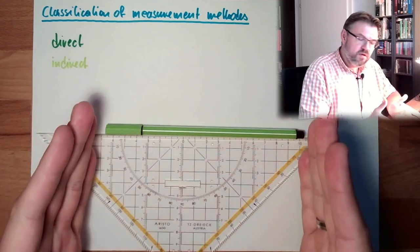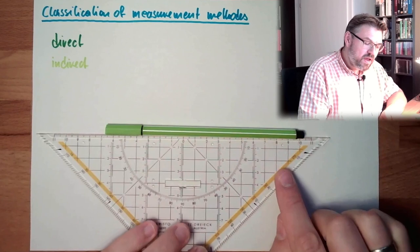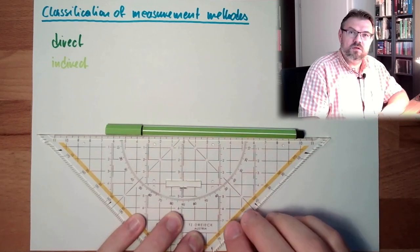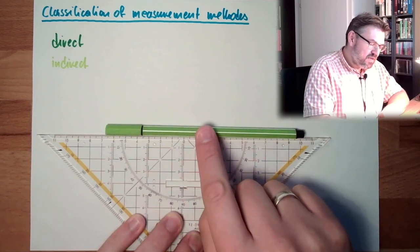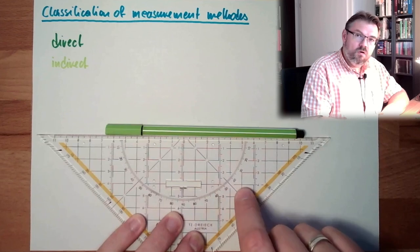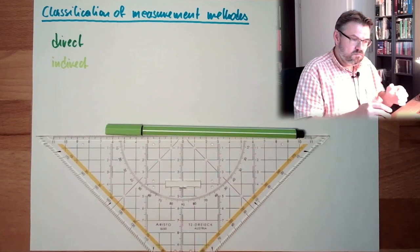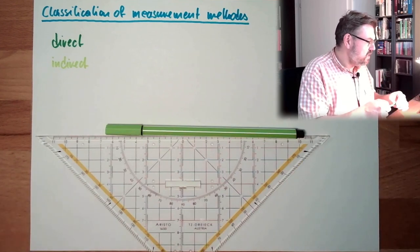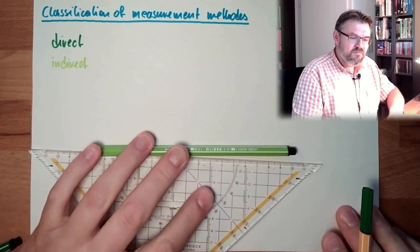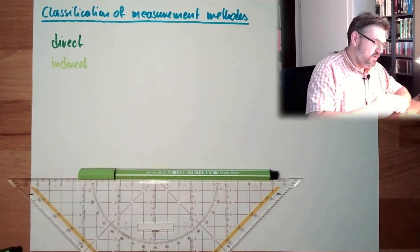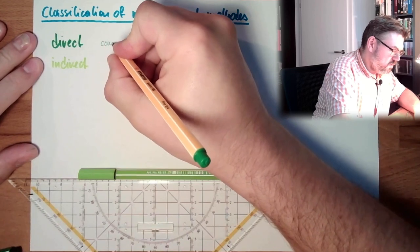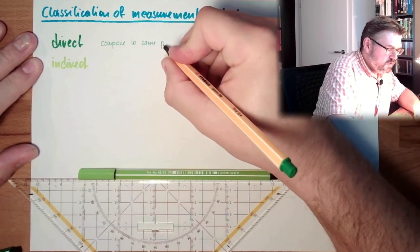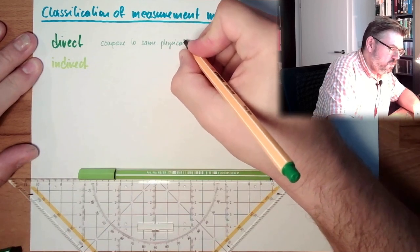Measure, compare with a unit and directly compare with the unit of the same physical quantity. I am determining something and I'm comparing it to a normal which has the same property, quantity. In this case, length. So in direct case, we compare to the same physical quantity.